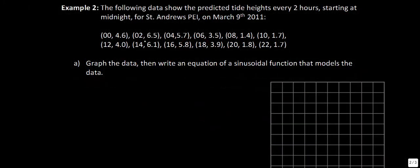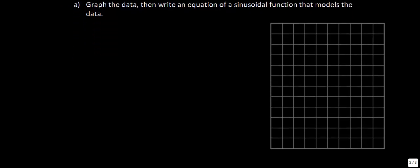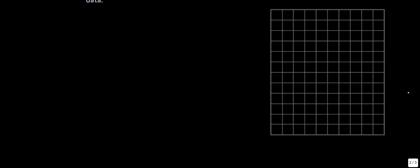Example two is a little different — we have a data set. The data shows predicted tide heights every two hours starting at midnight for St. Andrews, PEI on March 9, 2011. Time is given in the 24-hour clock and height is in meters. We need to graph the data and then write an equation that models it.